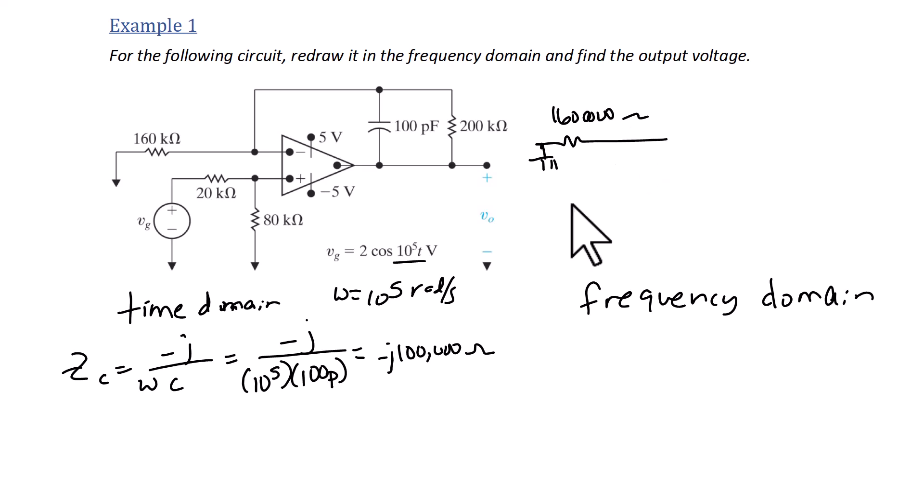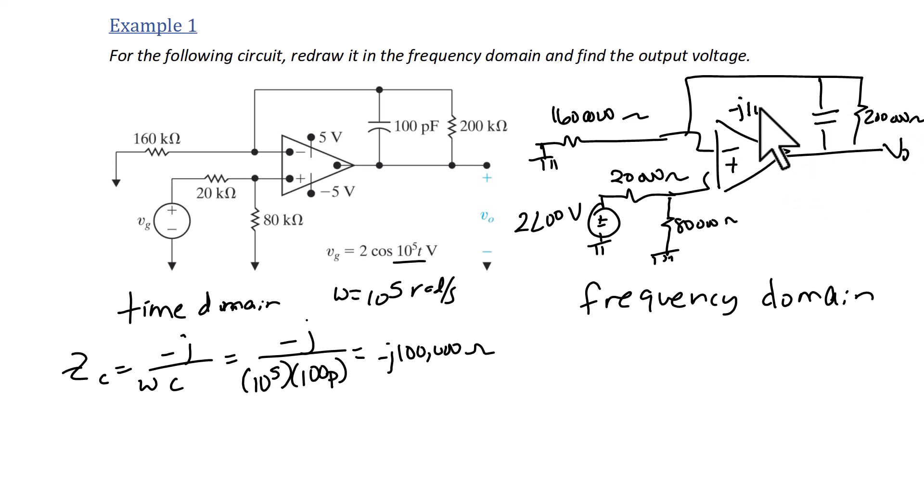You're going to have a 160 kiloohm resistor. You're going to have your voltage source as 2 angle zero degrees in series with a 20 kiloohm resistor and an 80 kiloohm resistor that goes to ground. And then in our feedback loop, we're going to have a 200 kiloohm resistor and our negative j 100k ohm capacitor.